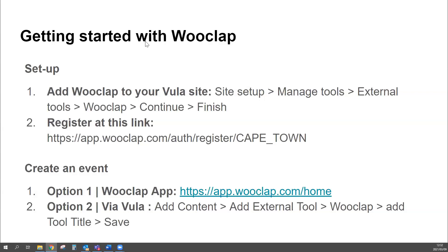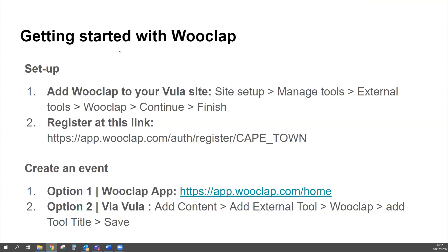Once registered and set up in your Vula site, create an event — either directly on the WooClap app, which will be available in your Vula site, or via Vula itself. To do it via Vula on a lessons page: add content, add external tool, WooClap, type in the title you want students to see as a link, save, and it will be saved directly in your lessons page.